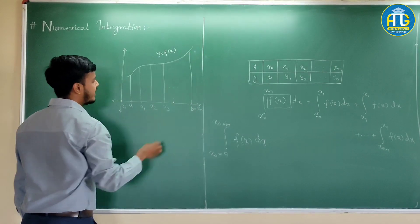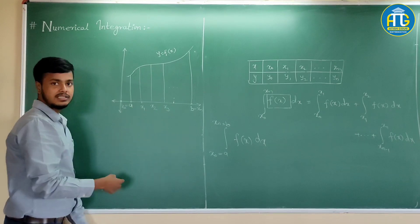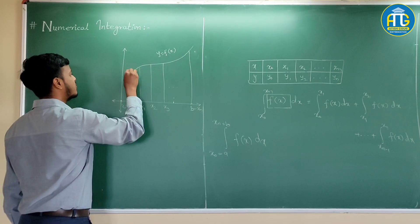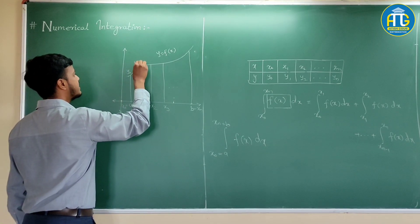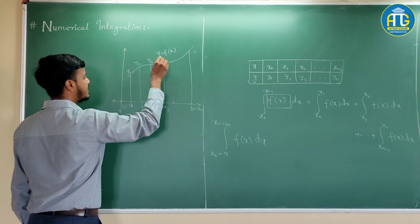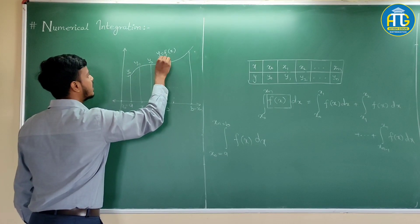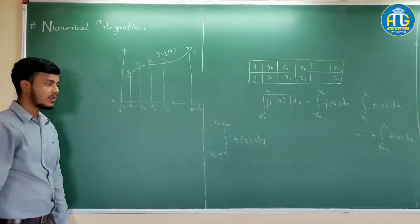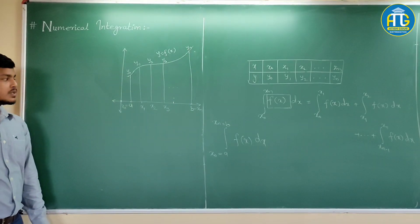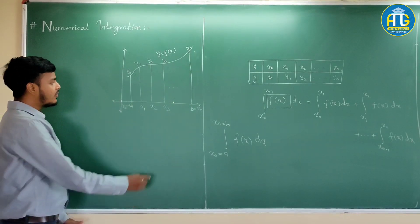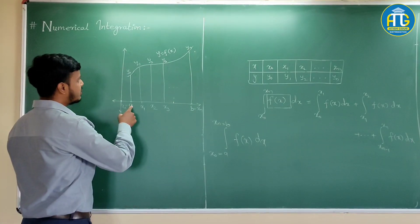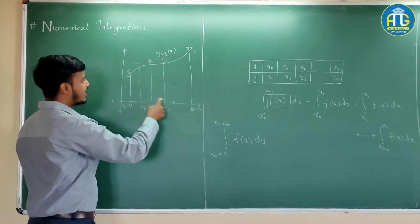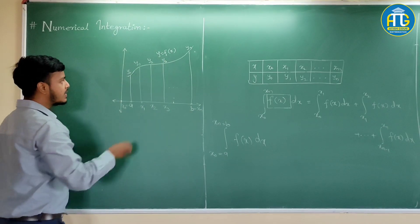At the end we have xn. Corresponding to these values of x, there are values of y: y0, y1, y2, y3, and yn. To find the integration of this function from a to b, we are dividing into sub-intervals.